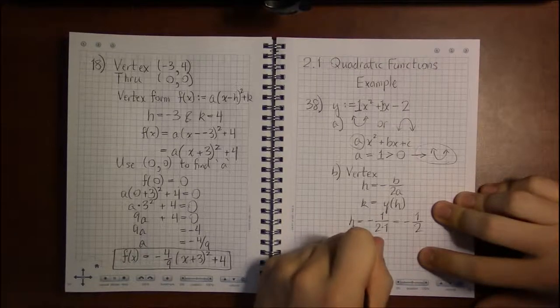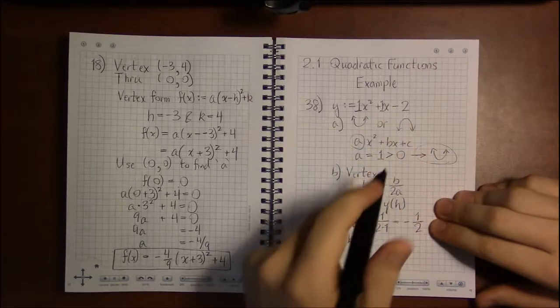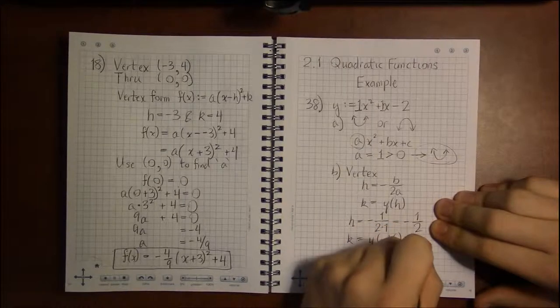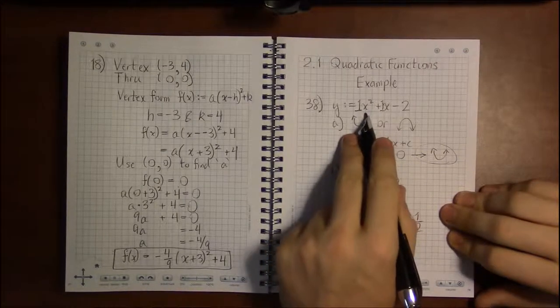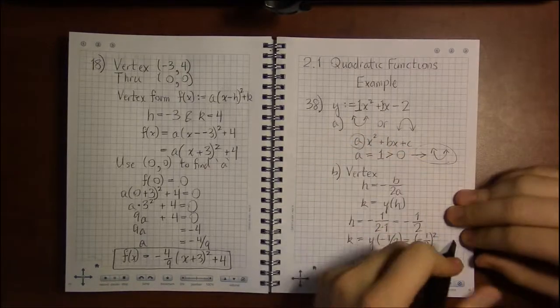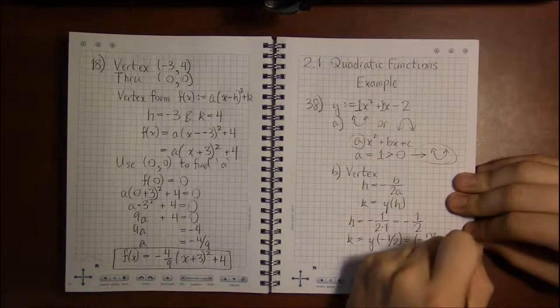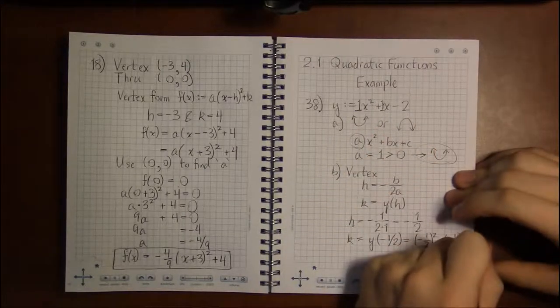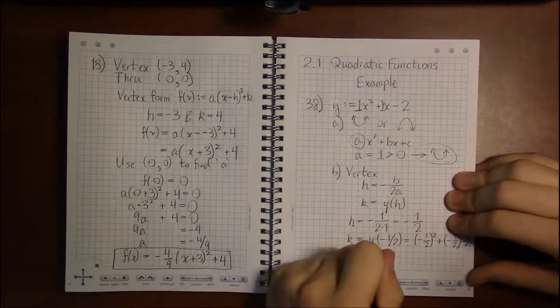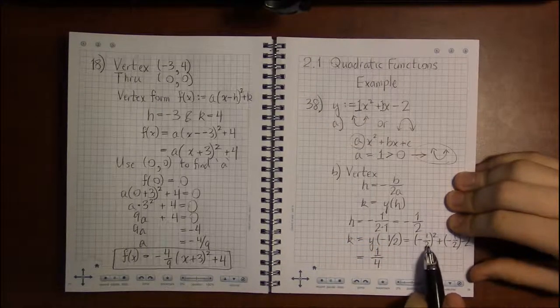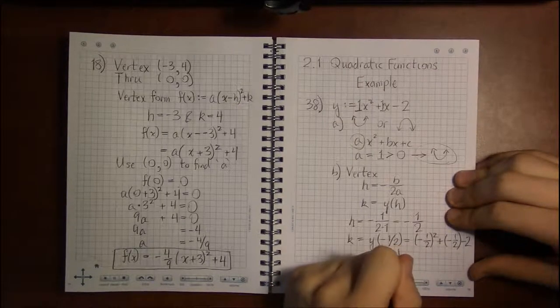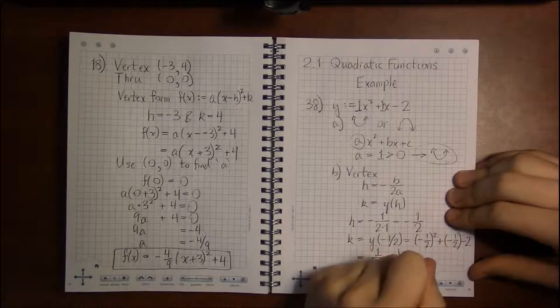And k we're gonna get by plugging minus 1 half in for x. So this is going to be minus 1 half squared plus minus 1 half minus 2. So minus 1 half times minus 1 half is going to be plus 1 over 4. Because multiplying fractions is simple, it's just straight across. Plus a minus becomes minus 1 half. And then minus 2.